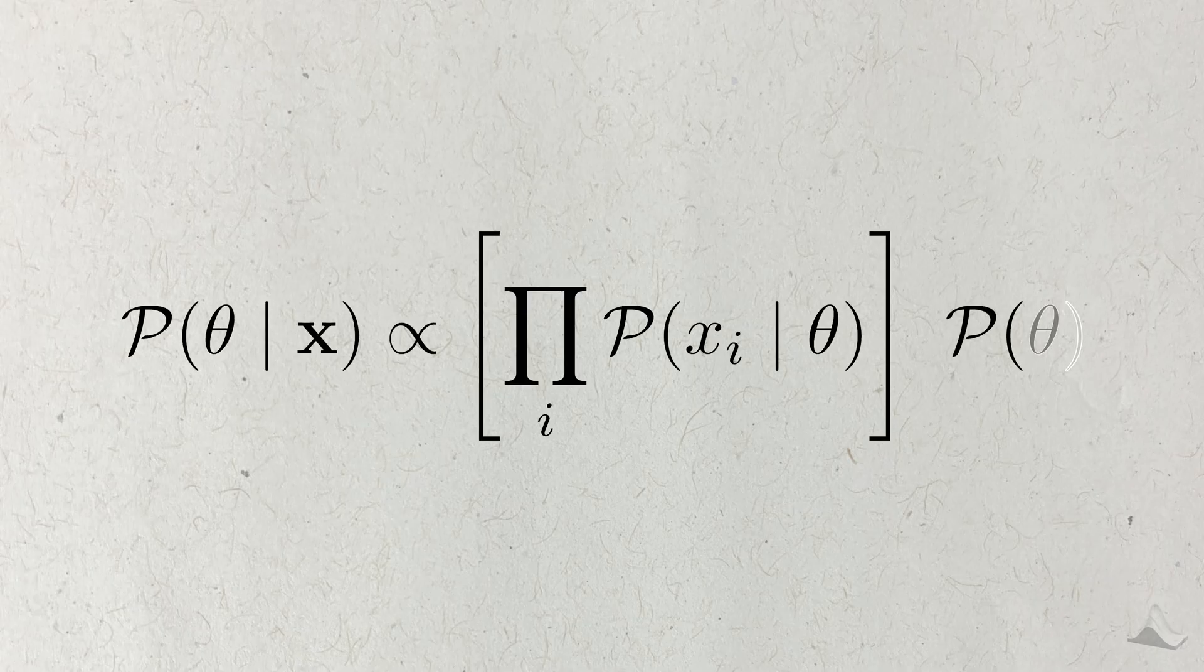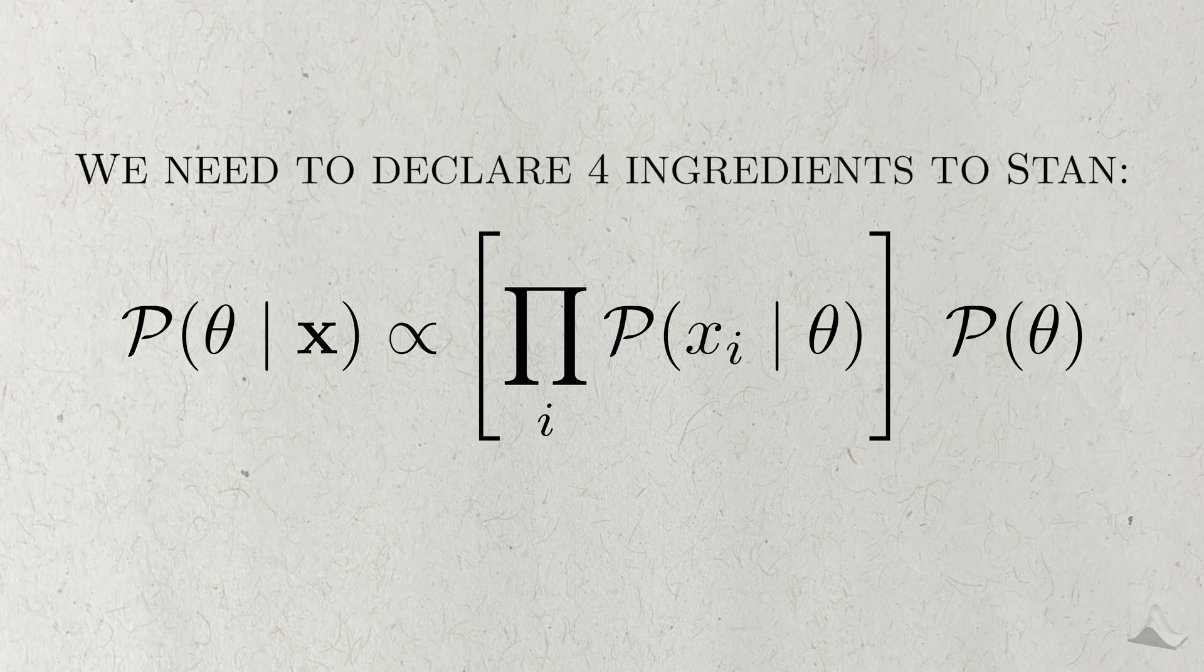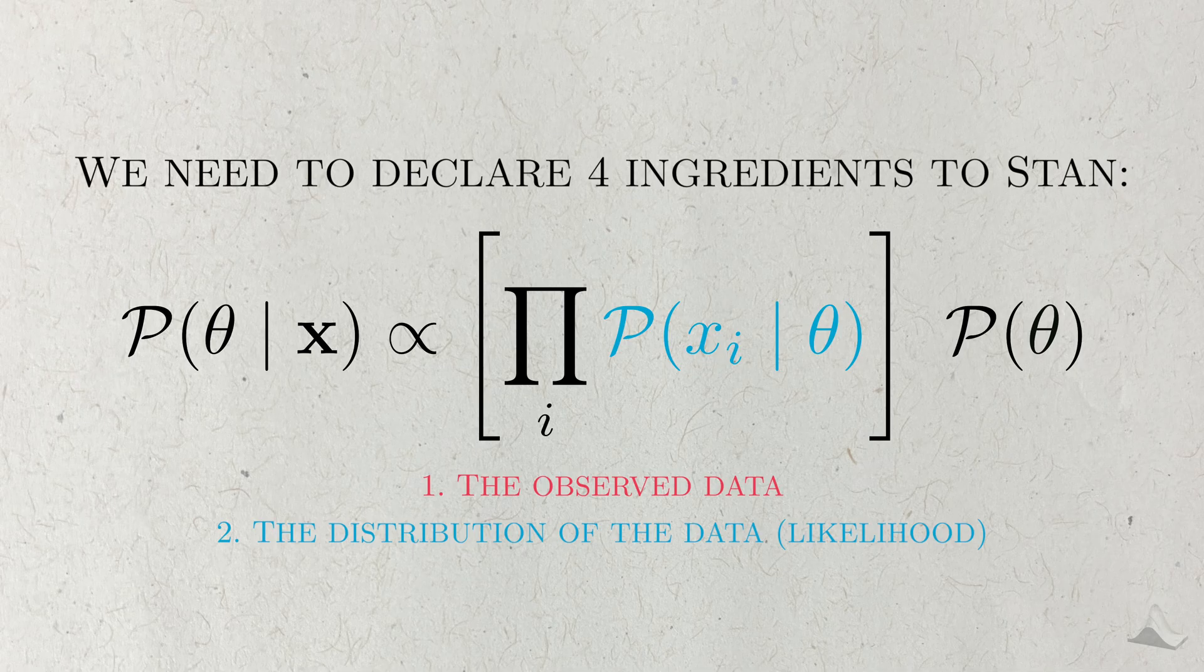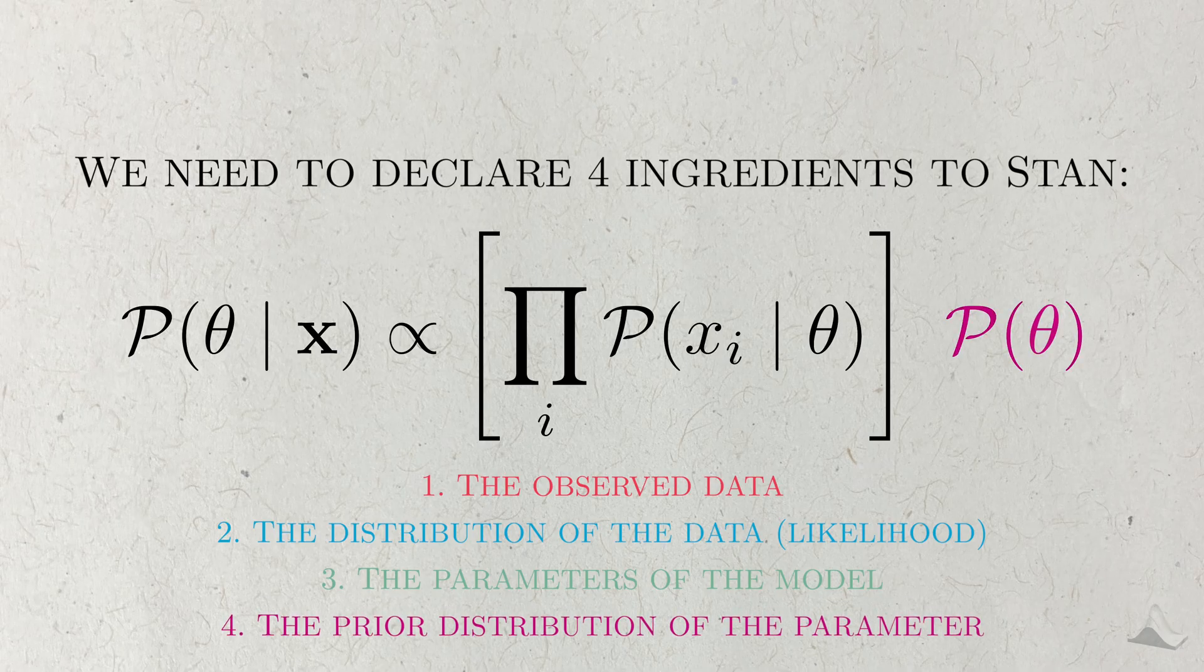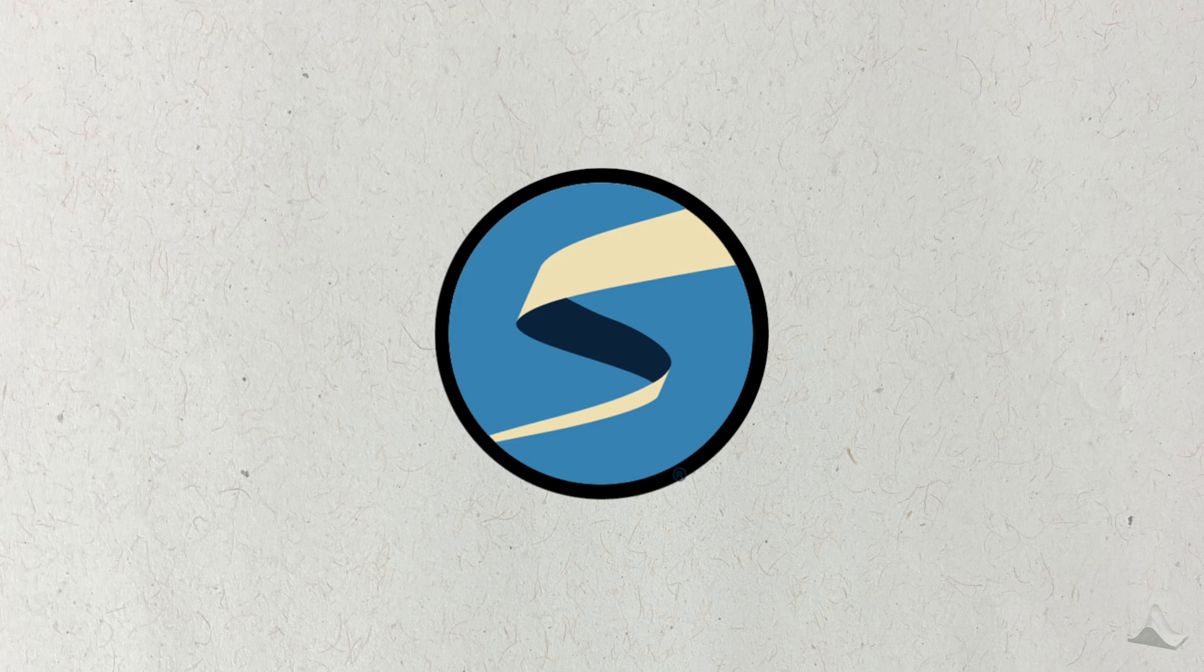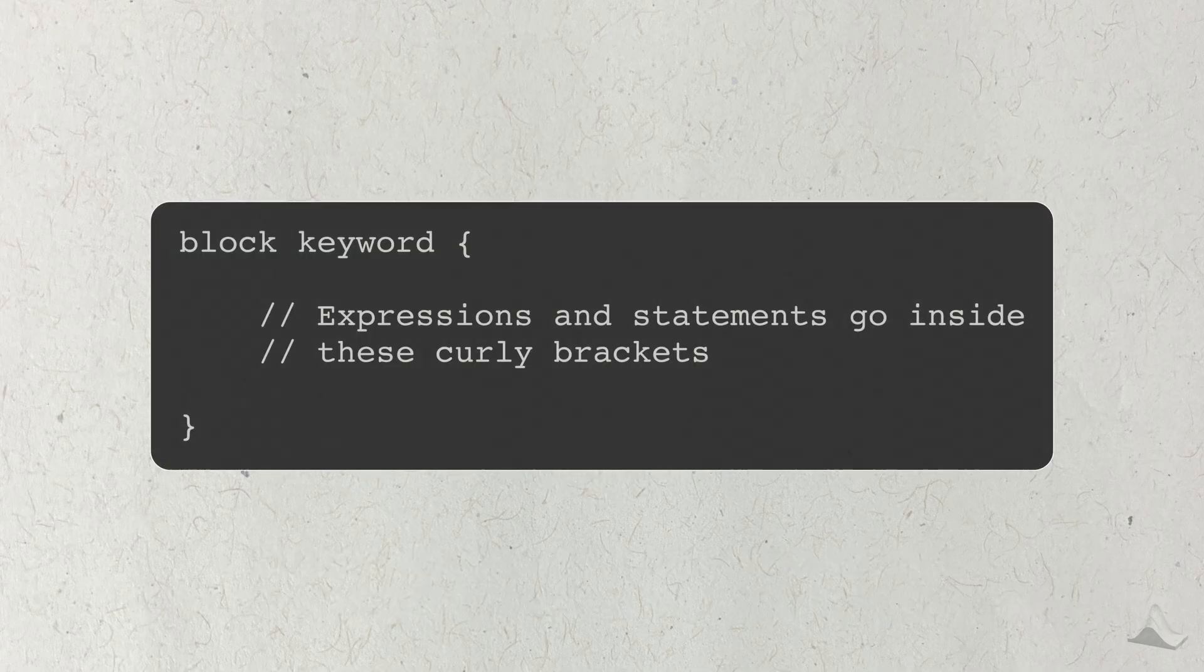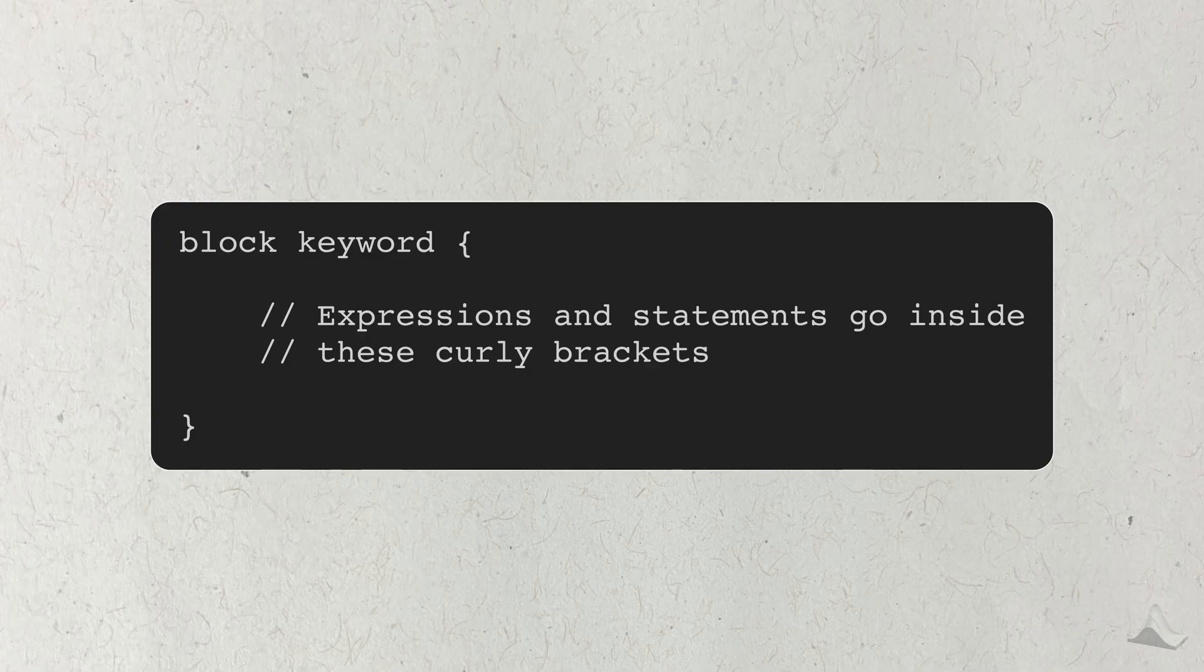To understand a typical STAN workflow, let's go back to our expression for Bayes' rule. To get a posterior distribution, there are four ingredients I have to specify for STAN. I need to specify what our observed data is, since it's used in our likelihood. Then I need to specify what distribution should be used for this likelihood. Third, I need to define the parameters that are used in the likelihood. And finally, we need to specify a prior for these parameters. We'll describe all of these in a STAN program, which is denoted with a .stan extension. STAN programs are divided into blocks, and these blocks roughly correspond to the different parts of Bayes' rule. A block starts with the keyword and is followed by some curly brackets. Within these blocks, we can declare all the things that we need for the Bayesian analysis.